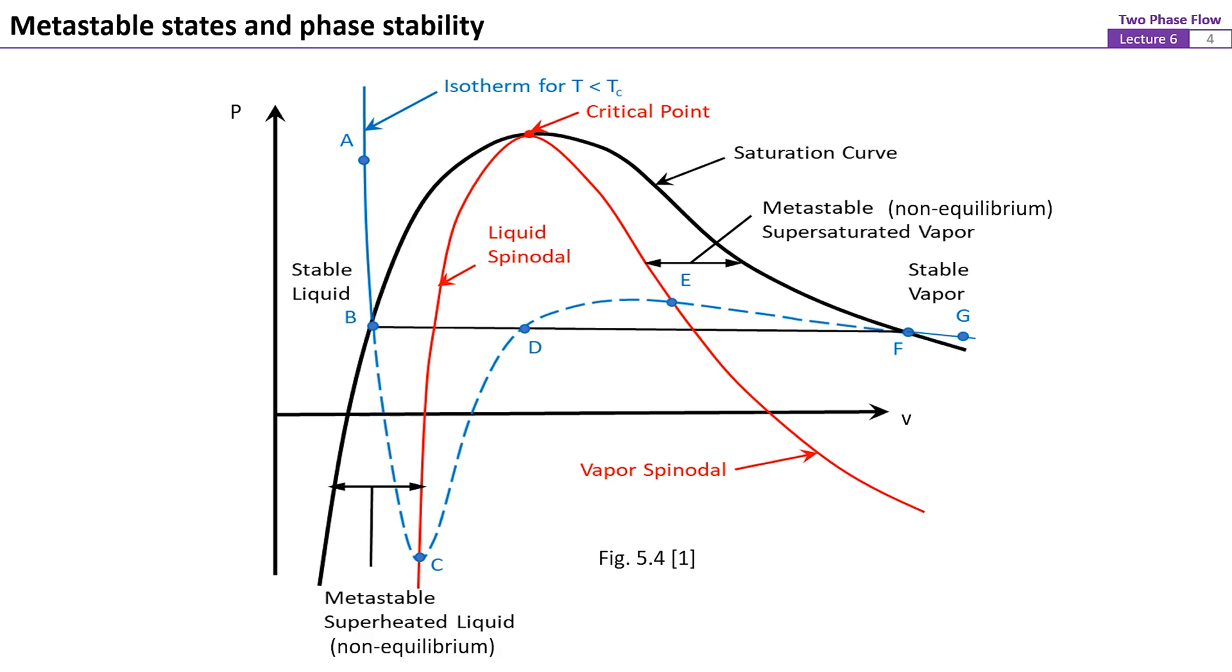These regions are called as the metastable regions on this figure. Note that in the metastable states, the liquid is superheated and the vapor is supersaturated, or can also be called as supercooled. Also note that states in these two regions are actually single phases in a non-equilibrium condition. At point C and point E, the value of ∂P/∂V at a constant T becomes positive.